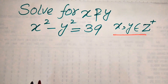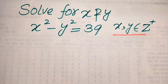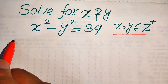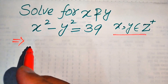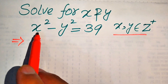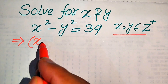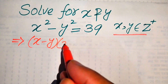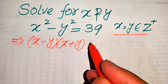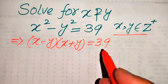We solve this problem for the positive integral values of x and y. First we focus on the left hand side and apply the famous algebraic formula: x squared minus y squared equals x minus y times x plus y, which equals 39.